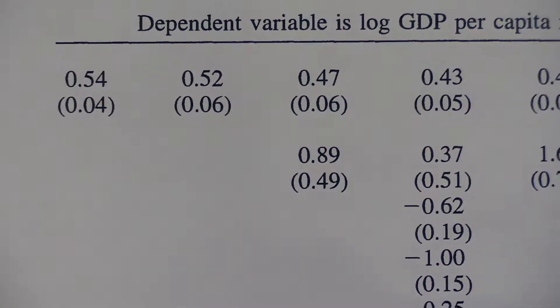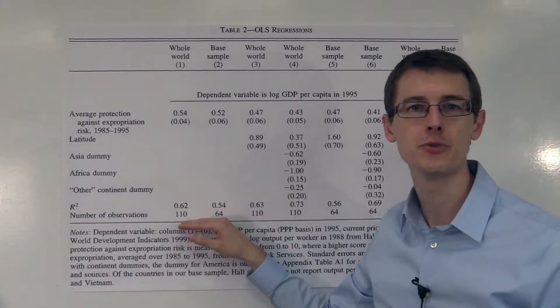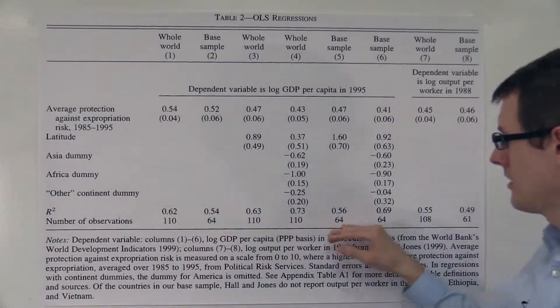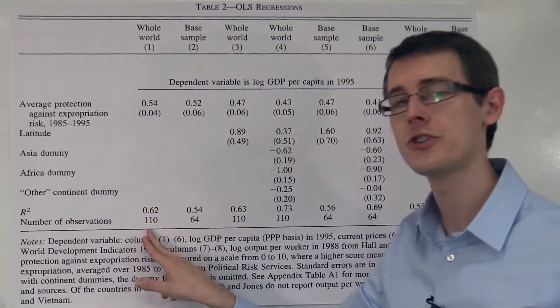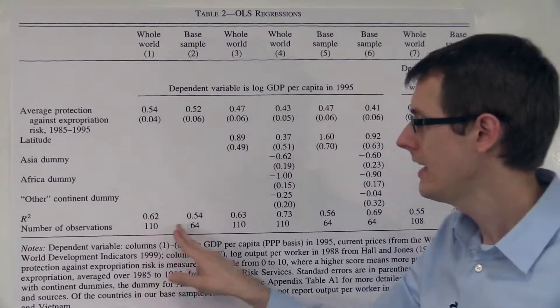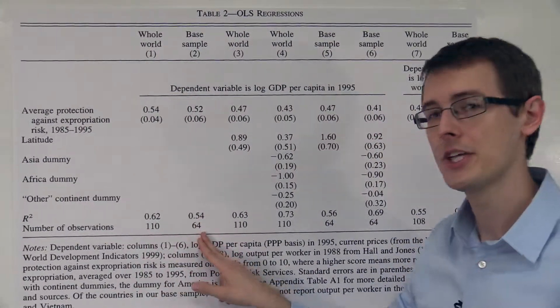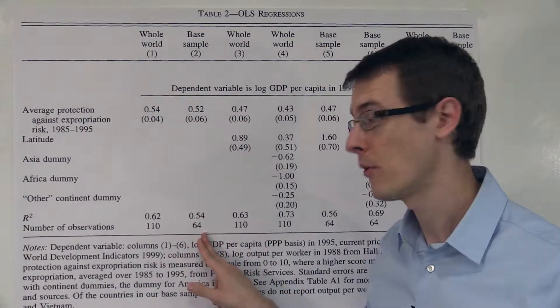Down here they show us how many observations we're using. In this specification there's 110, and in this specification there's only 64.